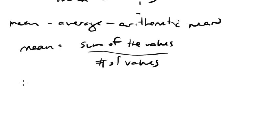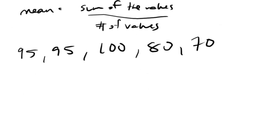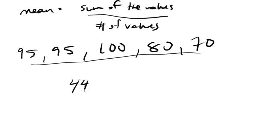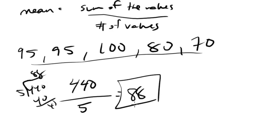So let's say you had a test where your grades were 95, 95, 100, 80, and 70, and you wanted to know your average for the quarter. First we add them up: 190, 290, 370, 440. The sum is 440, and then we divide by the number of grades, which is 5. That gives us 88. So the mean, or arithmetic mean, would be 88.